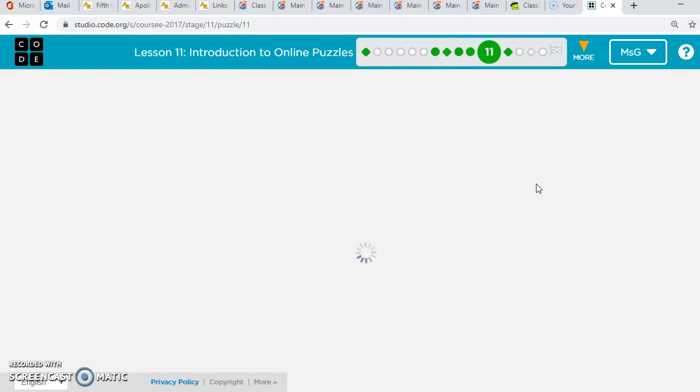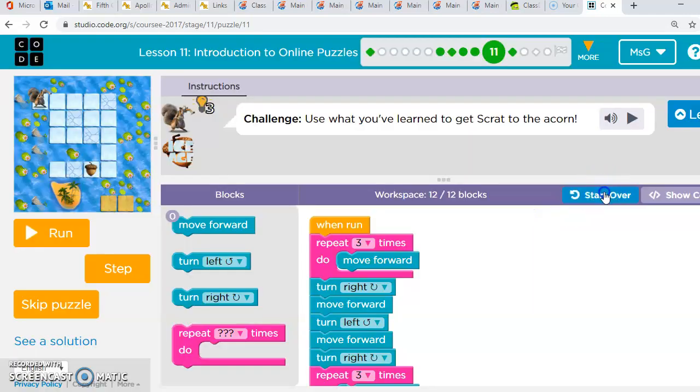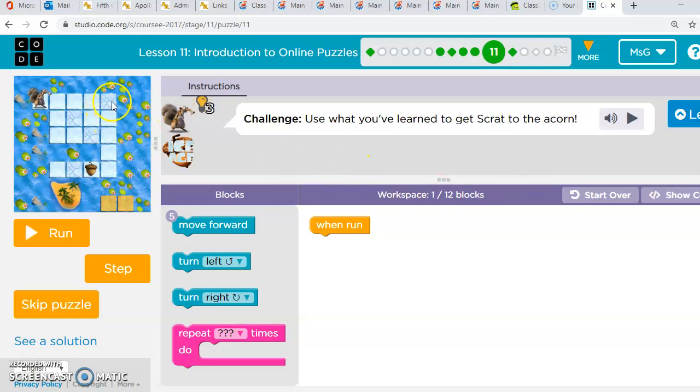For puzzle three, we need to use 12 blocks. Remember, we don't want Scrat to end up in the water, and we also can't let him get on these broken blocks of ice because he will fall through.